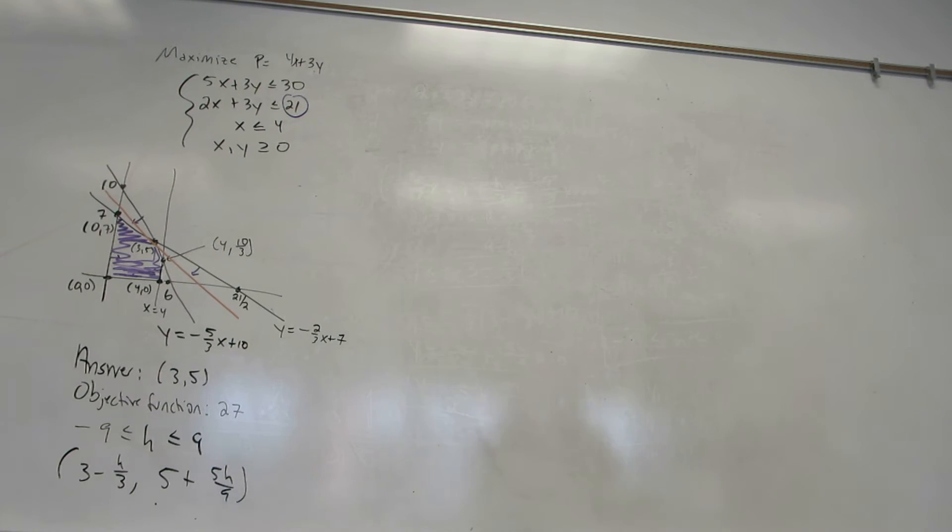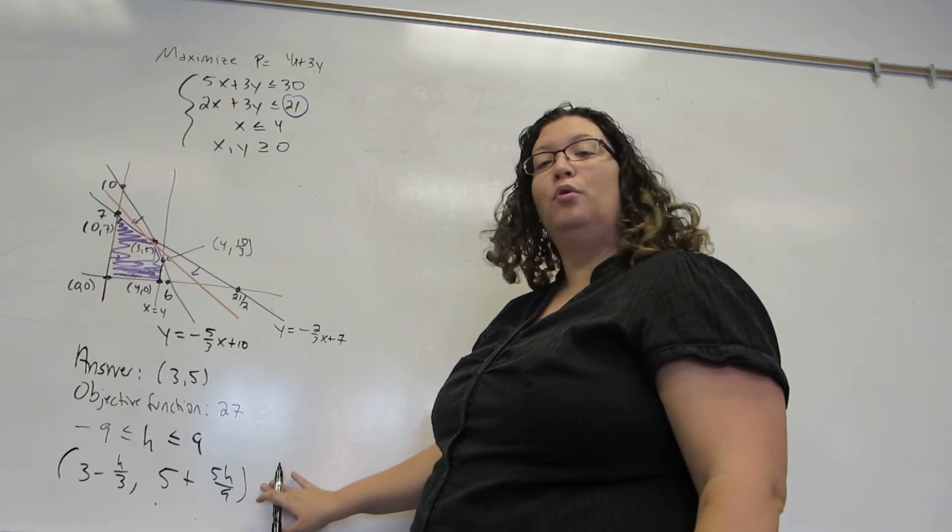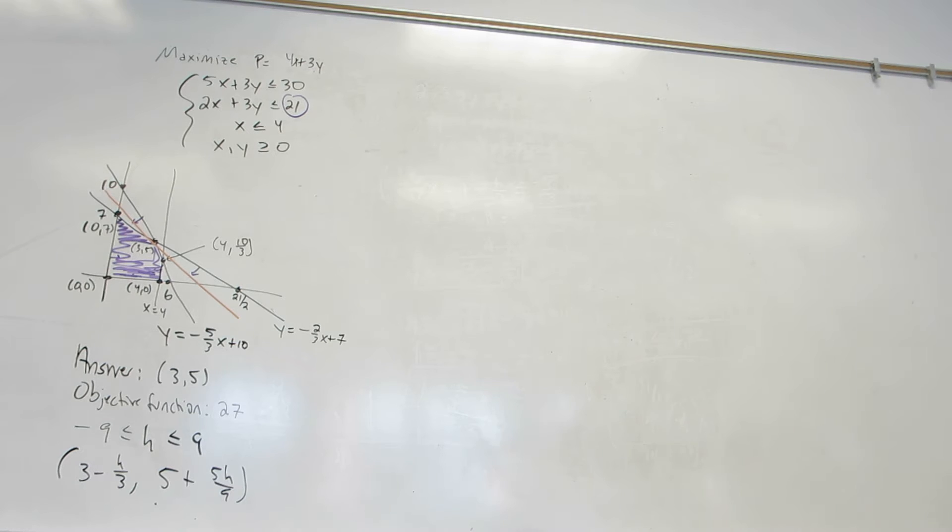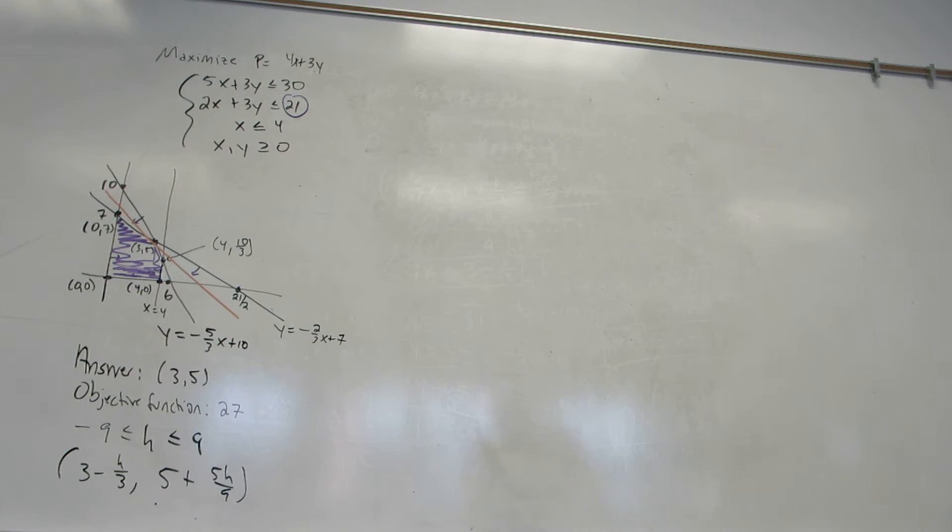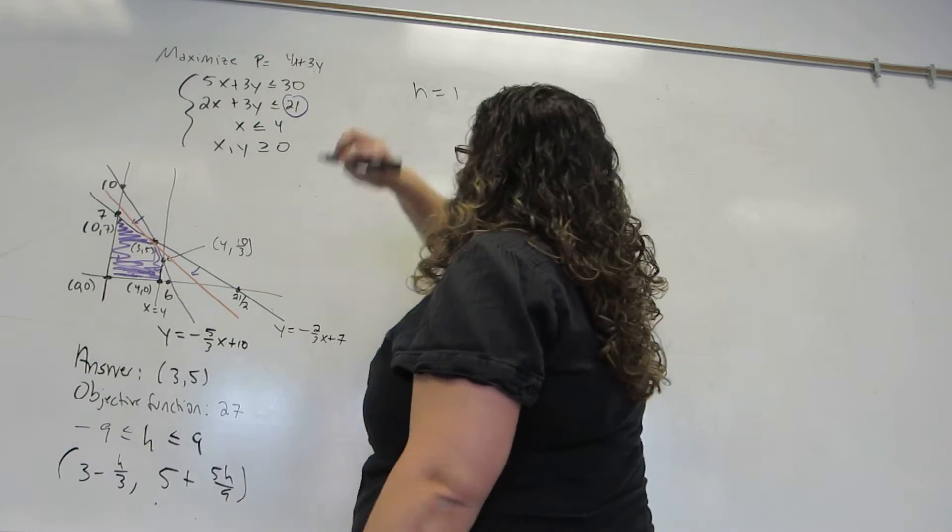Now, continuing with constraint 2, with the restrictions I already found for H and the new point I already found based on those H values, I'm going to compute the shadow price for constraint 2. To compute shadow price, I'm going to plug in H equals 1.